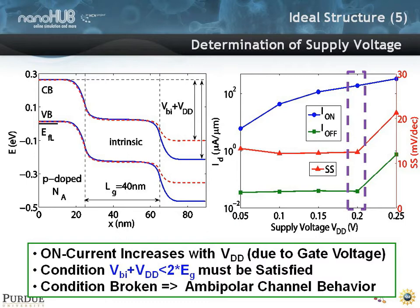But at roughly 0.2, the sub-threshold swing starts to increase dramatically from a value of 12 to over 20, and the off current also starts to increase. That is due to ambipolar channel behavior — if your bias is too large, your central blockage region is not blocking both channels. So you want to be in the supply voltage regime less than 0.2, which is roughly less than twice the gap with the built-in potential.